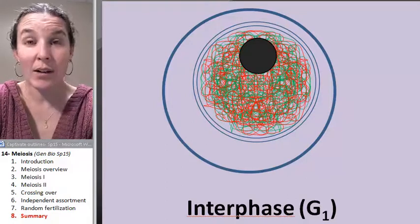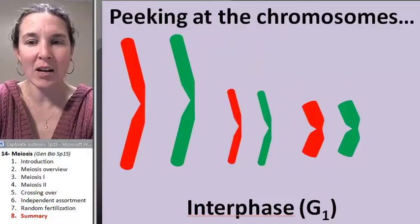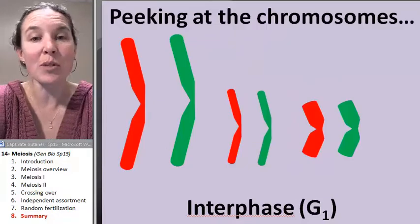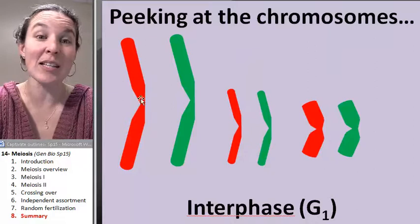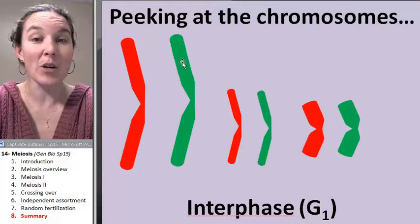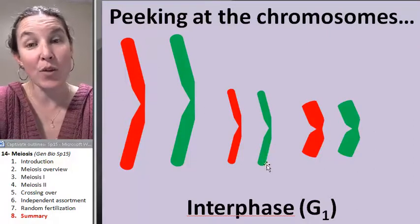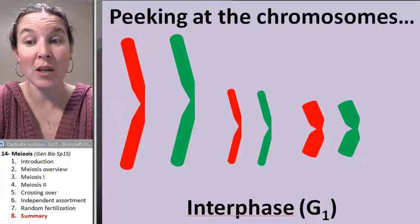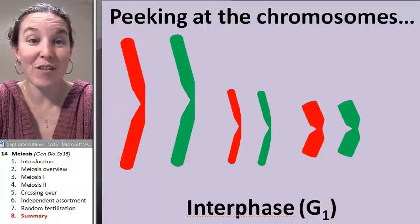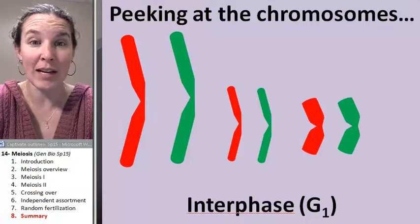In G1, we have not replicated our DNA. If we were to look at our chromosomes, remember they don't have sisters yet because they didn't go through S. But you can see in this case, I've got three pairs of homologs. So we're going to keep track of three different homologs and how they're lining up.